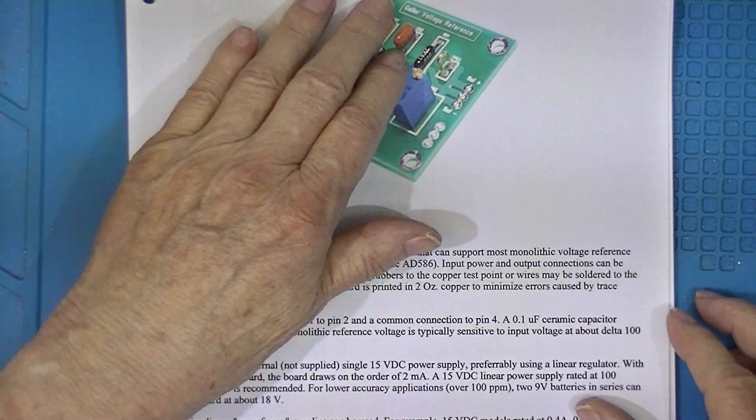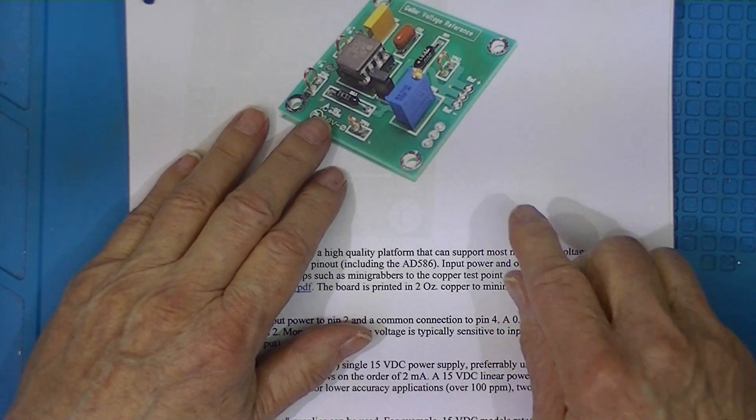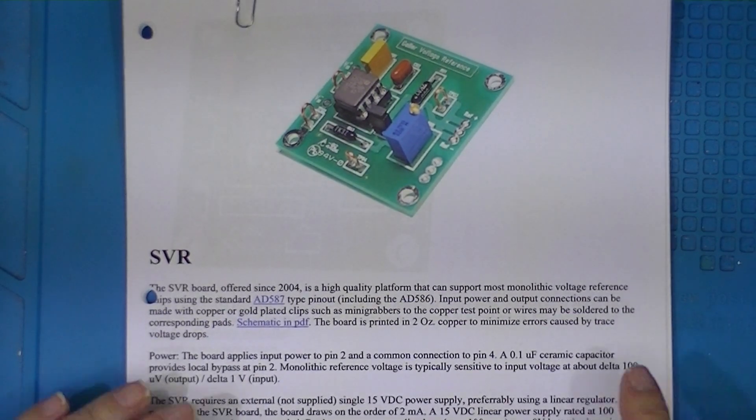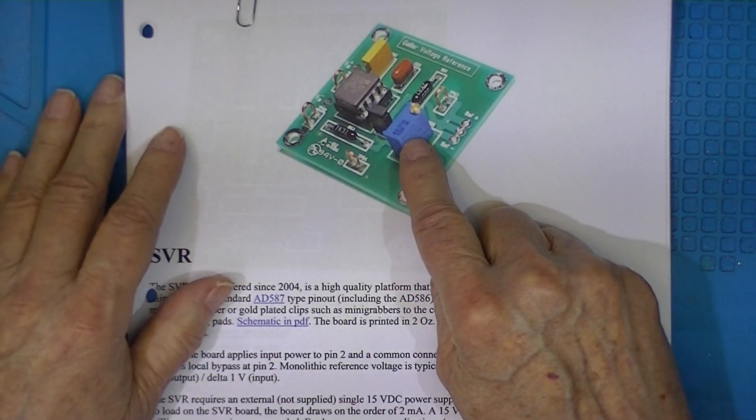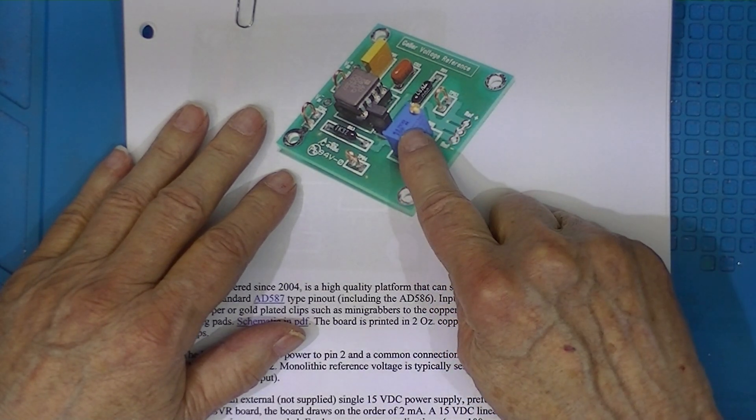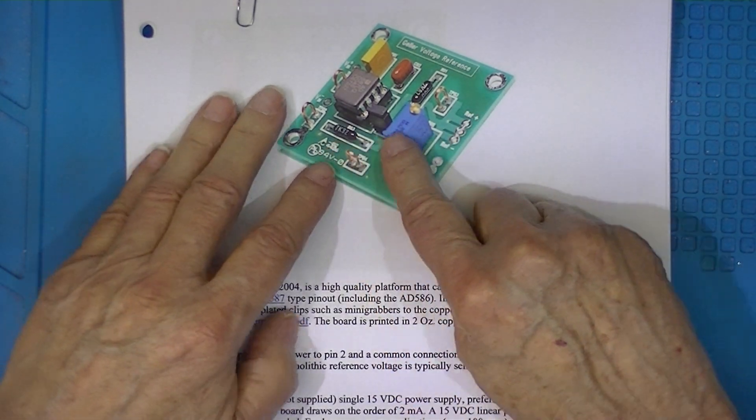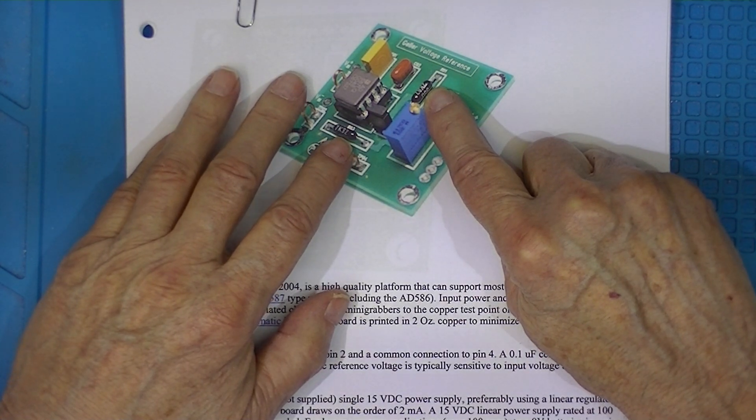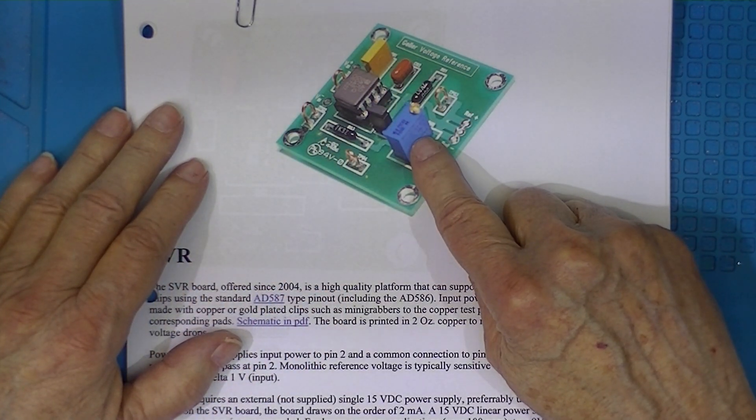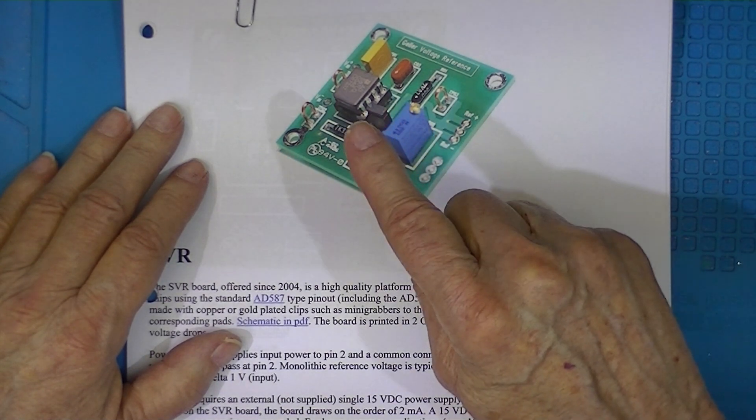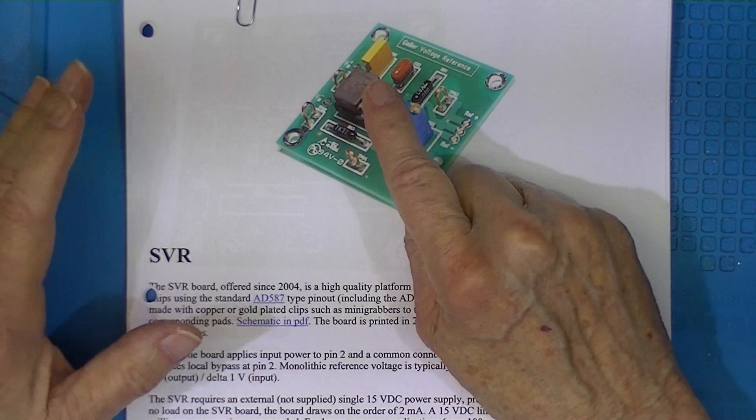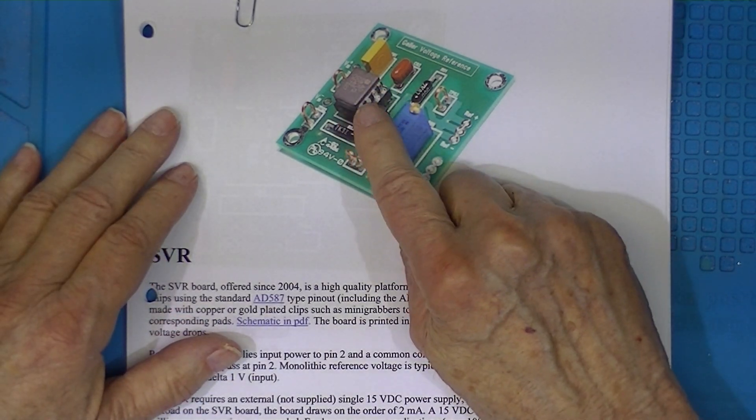Here it's shown fully populated with a trimmer. Now the trimmer is not necessary. In fact, the trimmer and these two resistors are not necessary. Just using some bypass capacitors and a chip, you can get a pretty accurate 5 or 10 volt reference.